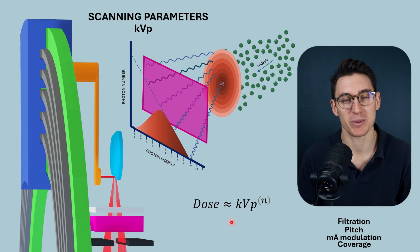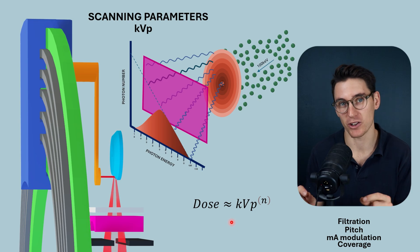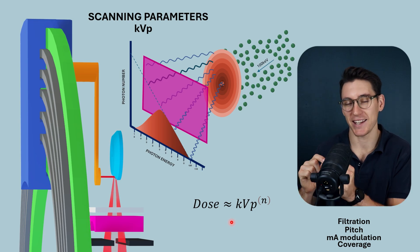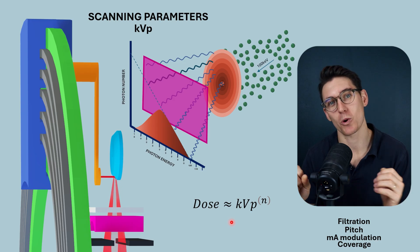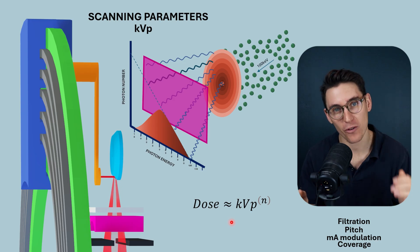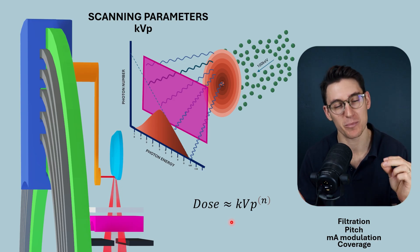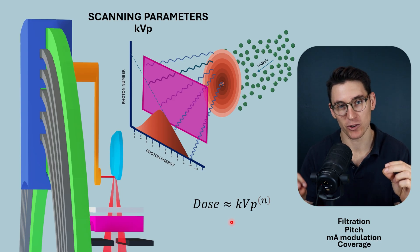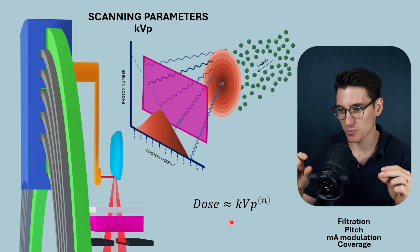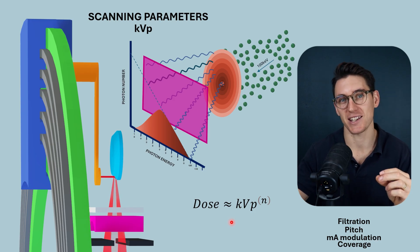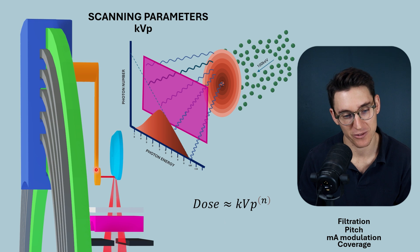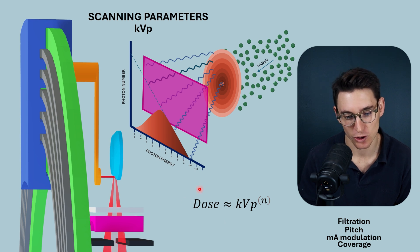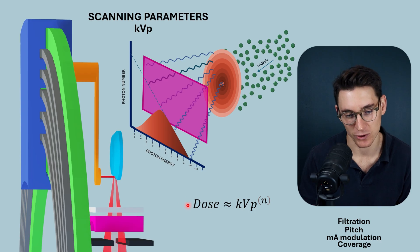You may remember the 15% rule from radiography, where increasing the KVP by just 15% would require a halving of the milliamperes of filament current in order to keep the dose the same. A small 15% increase required a halving of the filament current, which just shows you how much of a role KVP has to play in dose.